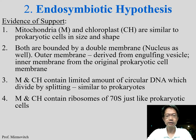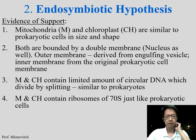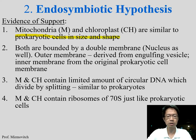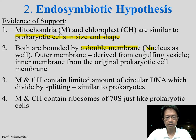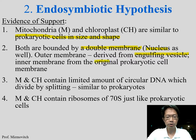What is the evidence to support the endosymbiotic hypothesis? First, mitochondria and chloroplasts are similar in size and shape to prokaryotic cells — eukaryotic cells are much larger than prokaryotic cells. Second, they have a double membrane: the outer membrane derived from engulfing — meaning from our cell membrane — and the inner membrane is the original prokaryotic cell membrane.